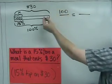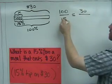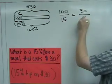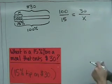If 100% is equal to $30, then 15% is equal to X dollars over here. So we've set up our proportion here.